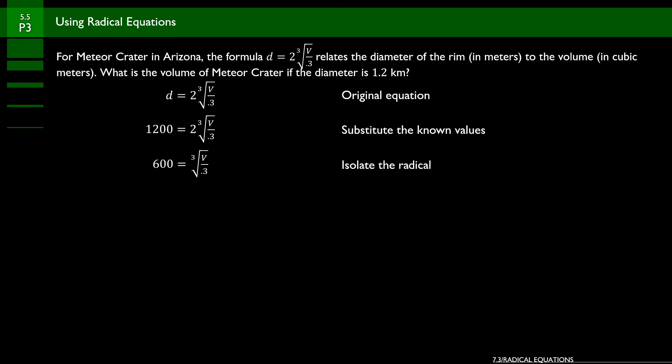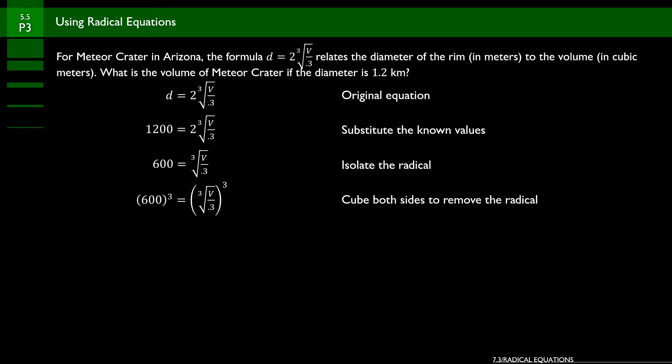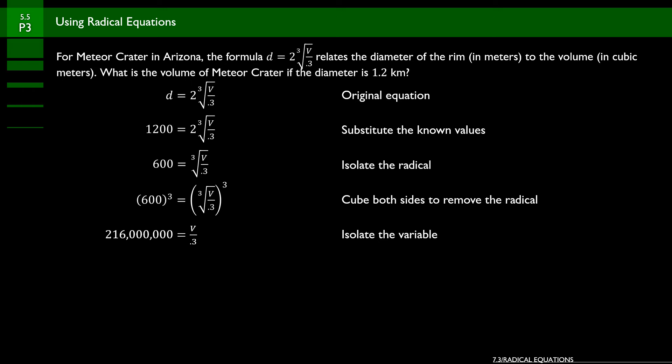To get rid of the cube root, we raise both sides to the third power. Whatever you do to one side, do to the other: 600 cubed is 216,000,000, and the radical is eliminated on the right, leaving v over 0.3. Now multiply both sides by 0.3, and you get 64,800,000. That is the volume of Meteor Crater in Arizona in cubic meters.